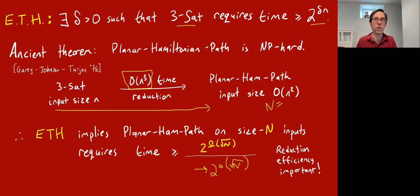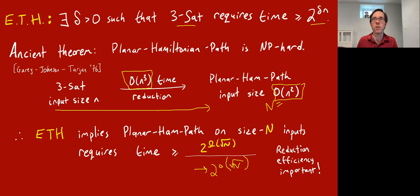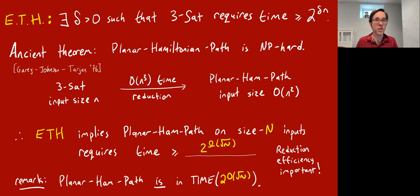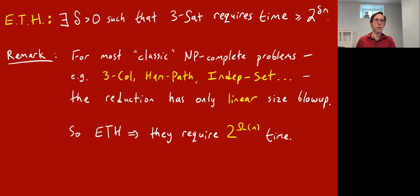What was actually quite important here is how efficient your reduction was. This is why this sport of proving hardness results is really about algorithms — you're trying to find really efficient reduction algorithms. What really mattered here was not so much the running time of the algorithm, but how much the size blowup was. It's also a fact that you can solve planar Hamiltonian path in time 2^(O(√N)), so this result is kind of tight.